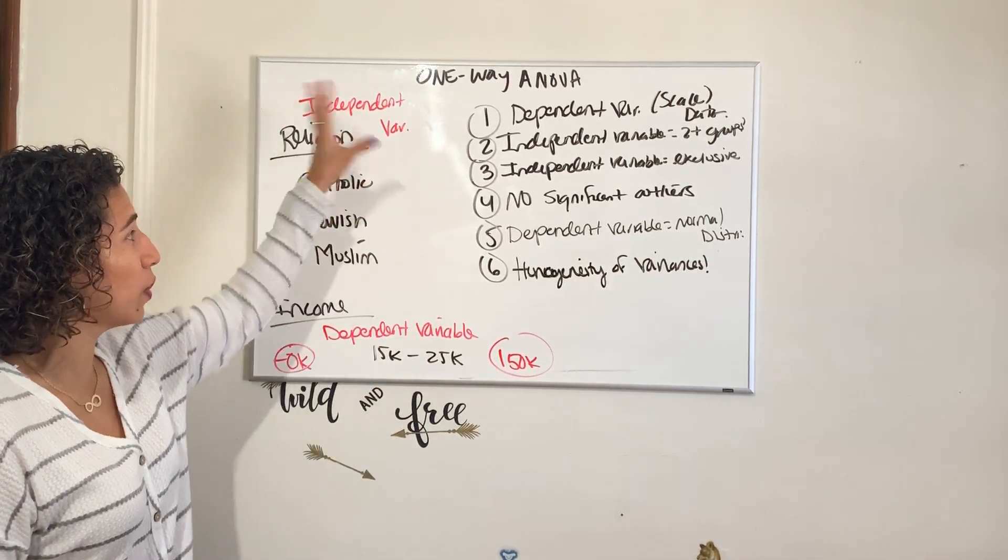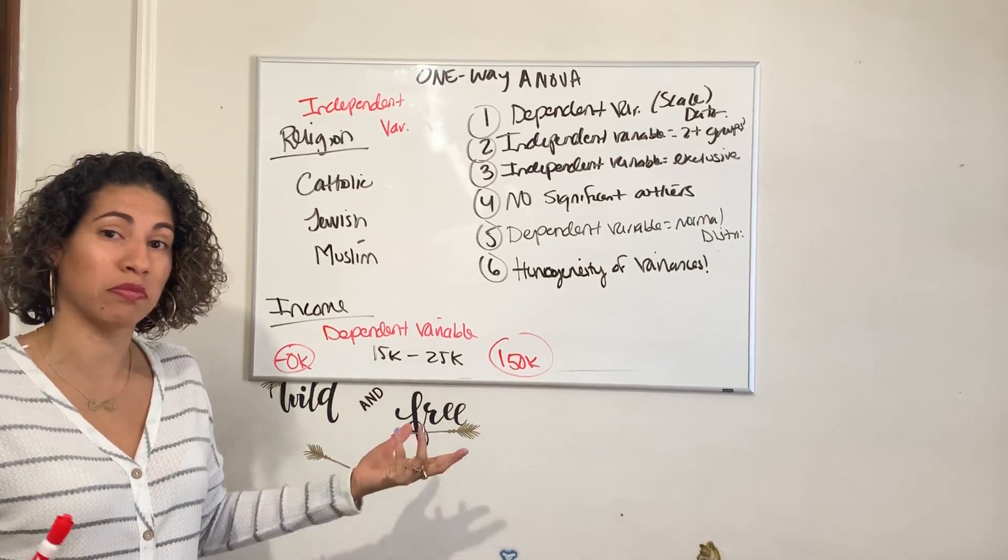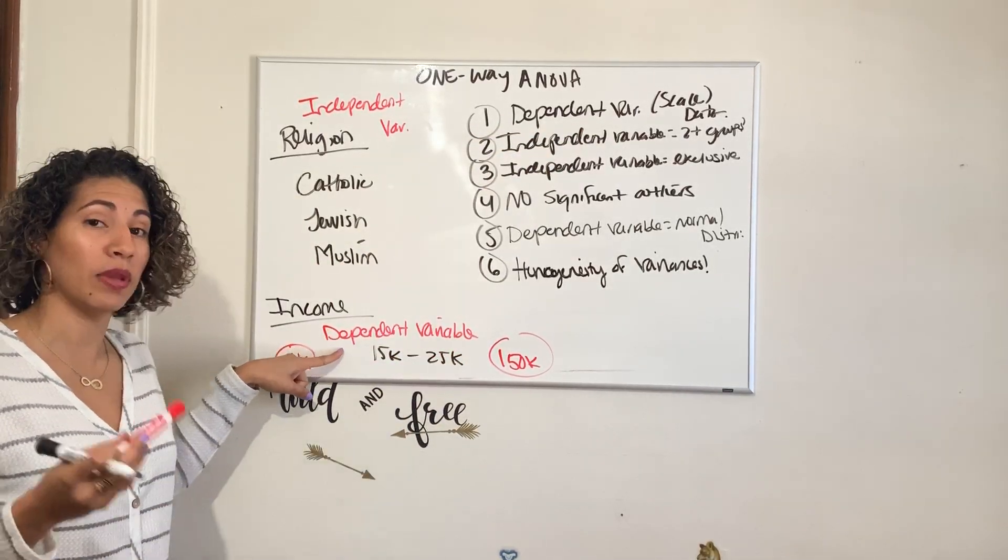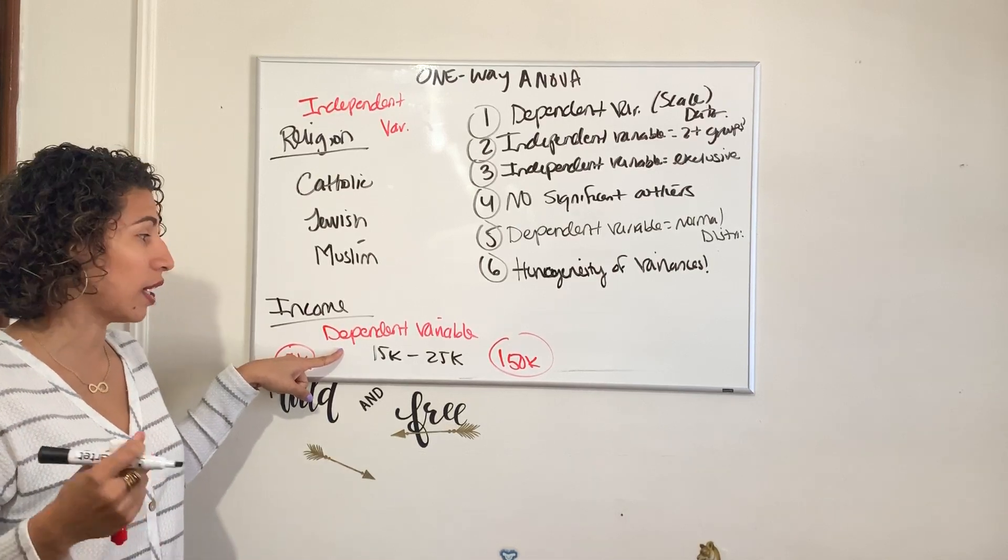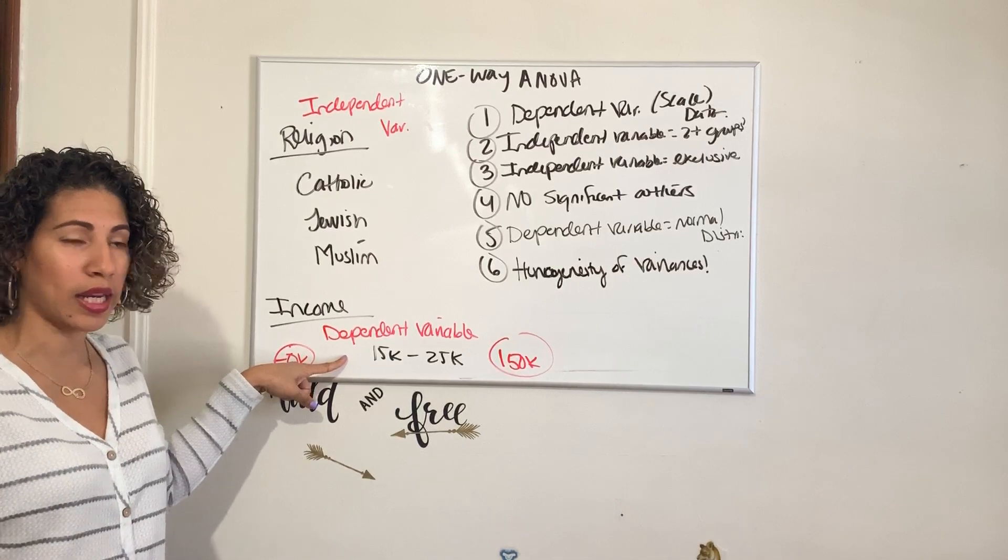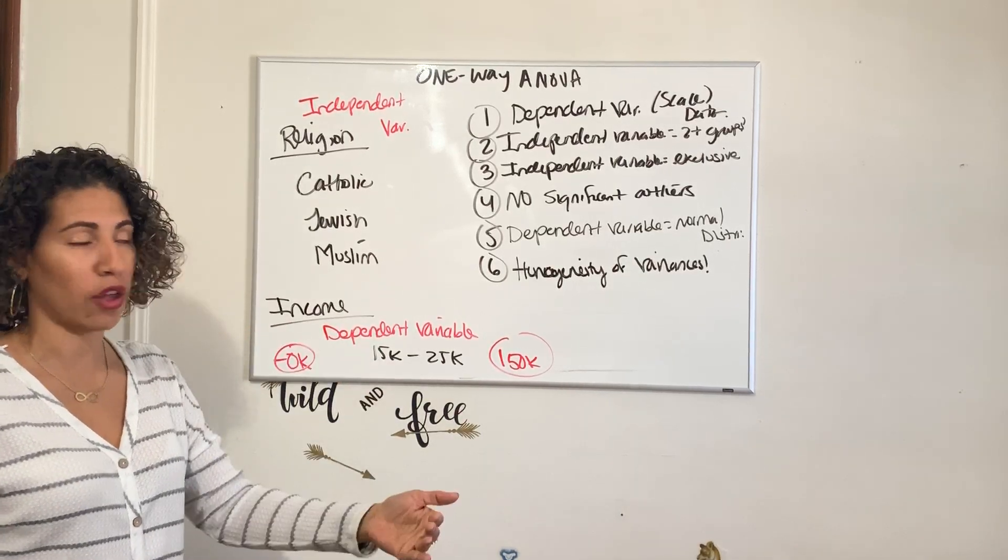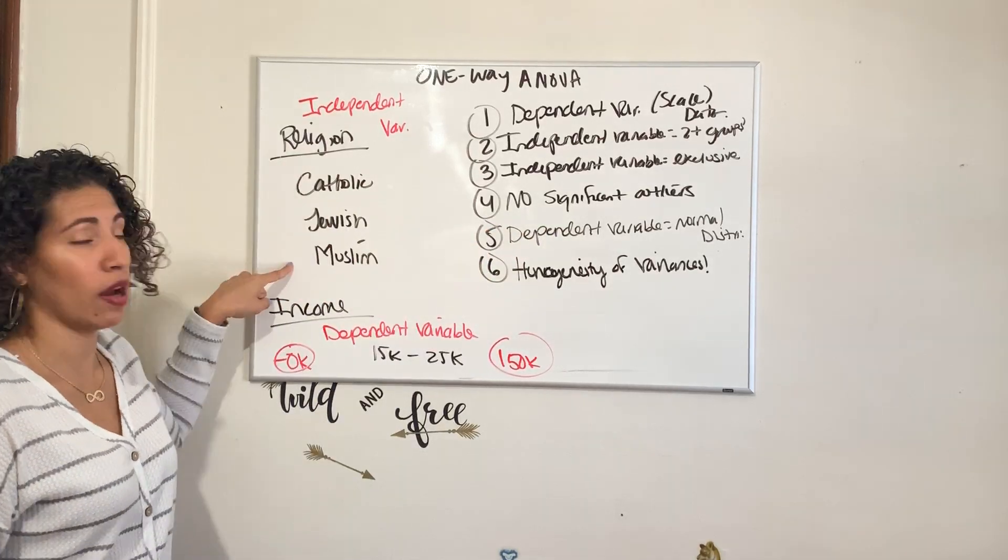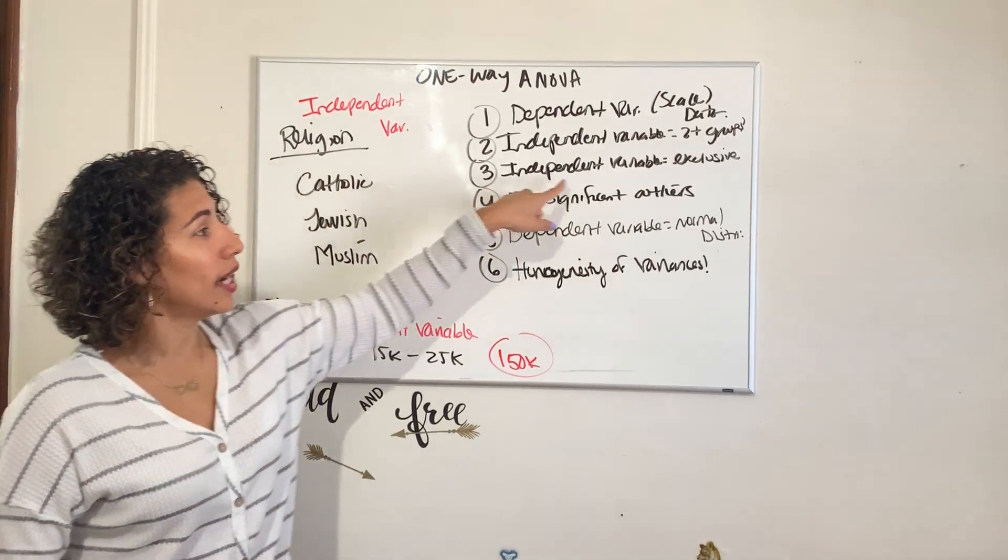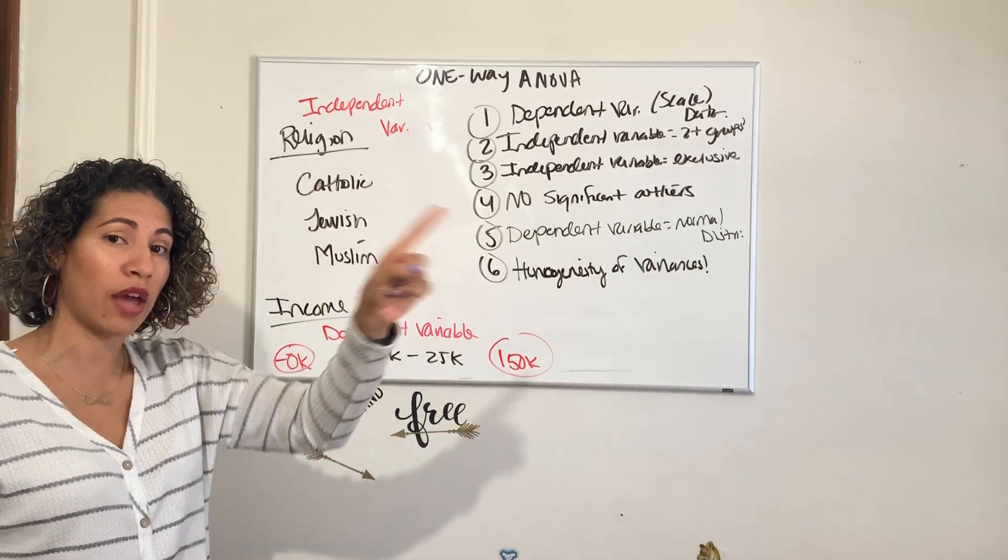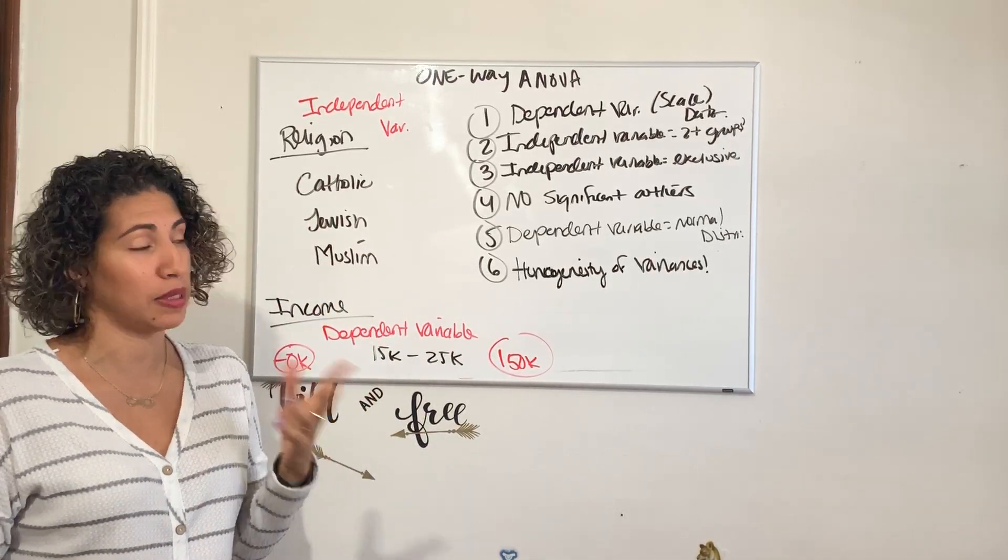So if we look at all of these once again, did we actually make sure that this is all held true? Yes. Dependent variable should be scale data - income leads to numbers. It's data that can be calculated and measured, not like gender or categorical, not a ranking. It's data that leads to values and numbers. Independent variable has two or more groups - we have two or more groups. Independent variable means they're exclusive - each person we're going to measure only once. You're either Catholic, Jewish, or Muslim. You can't double dip.